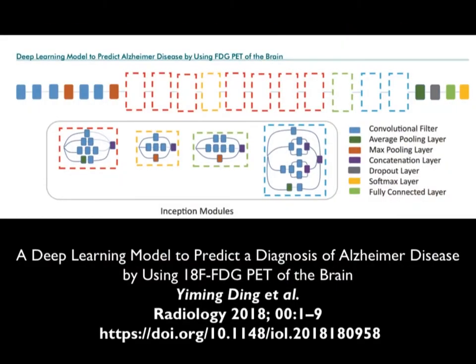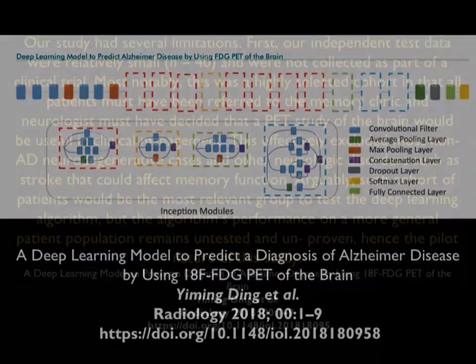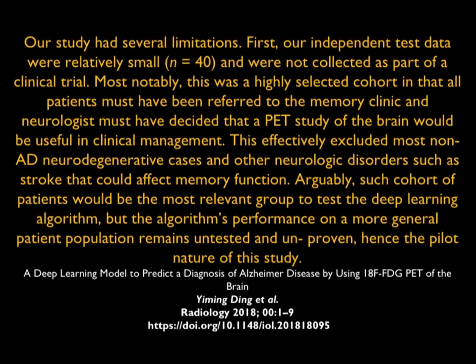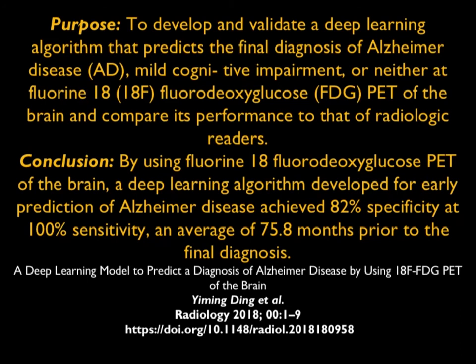The study has several limitations, but you can see what direction things are going and how quickly they're getting there. The conclusion: a deep learning algorithm developed for early prediction of Alzheimer's achieved 82% specificity and 100% sensitivity, an average of 75.8 months prior to the final diagnosis. Indeed, very impressive.